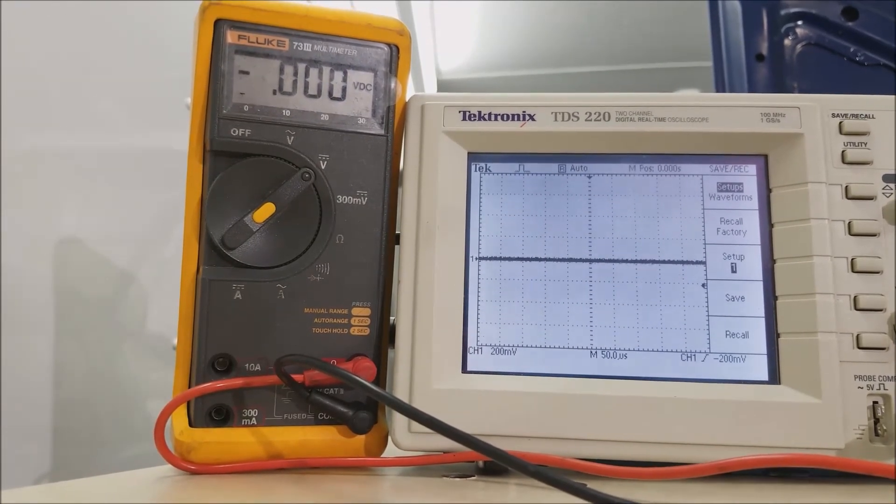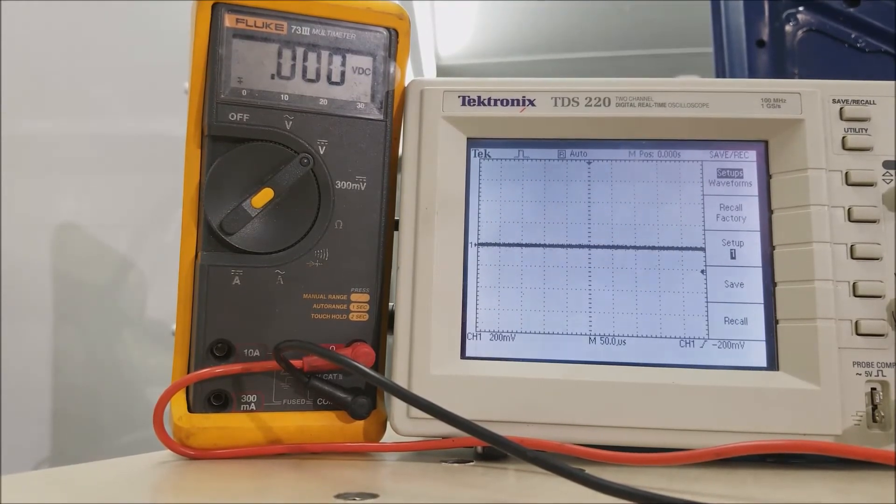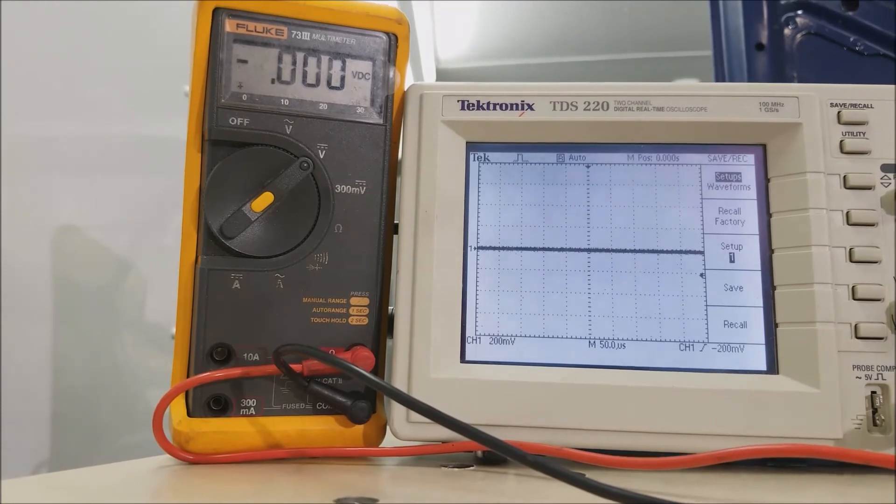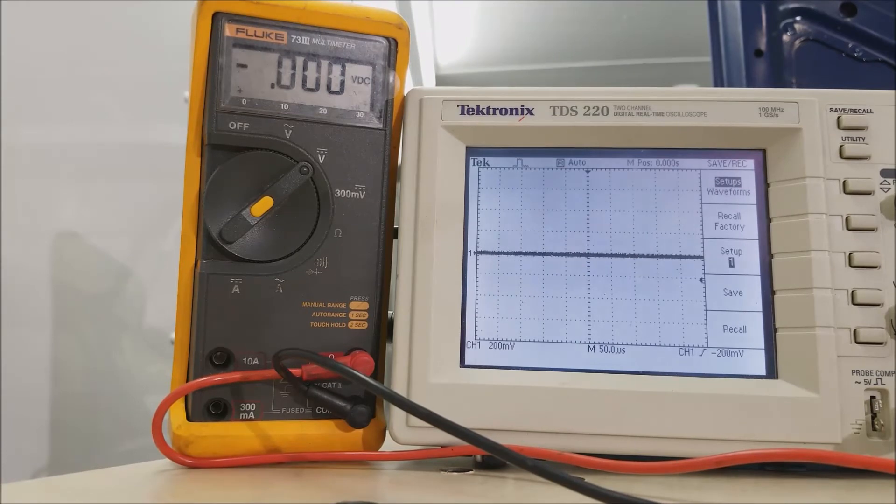This is the same scale as the previous test, and notice there's quite a bit less loss to the chassis ground. Probably should move the ground of the battery up to the same location. Let's do it a couple more times.